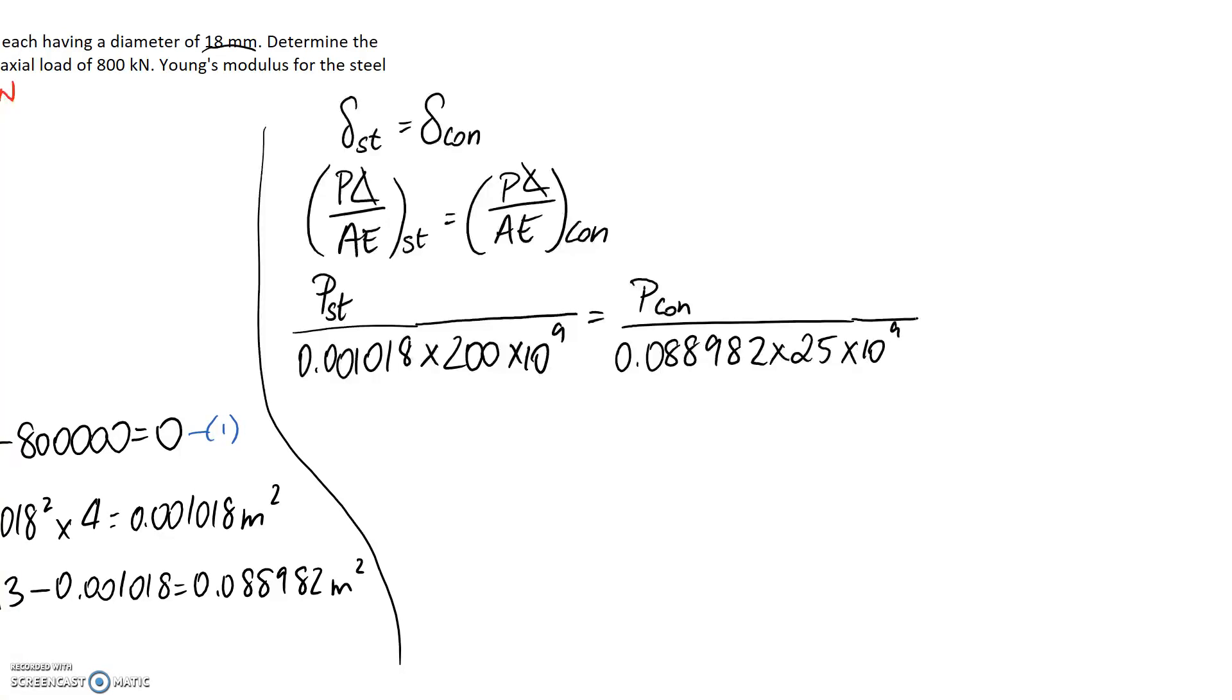So from this, we should be able to get a relationship between steel and the concrete. If we go ahead and get P_steel on its own, so multiplying all this up to the other side, we end up with it being equal to 0.0915 times whatever the force in the concrete is. And this here represents our second equation.